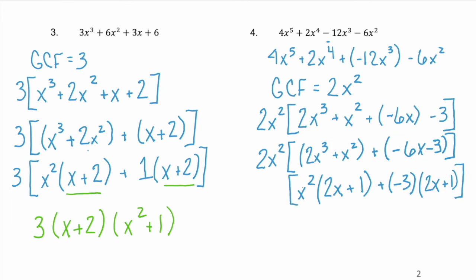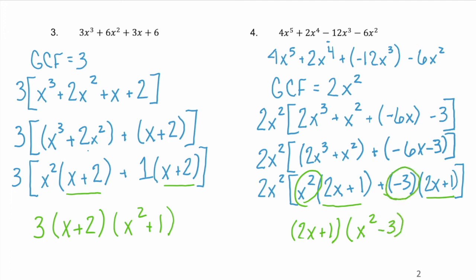Both groupings factored out the binomial (2x + 1). So if we pull out (2x + 1), the binomial left behind is (x² - 3). Bring down the GCF, and you have the final factored form: 2x²(2x + 1)(x² - 3). Now we've factored by grouping.